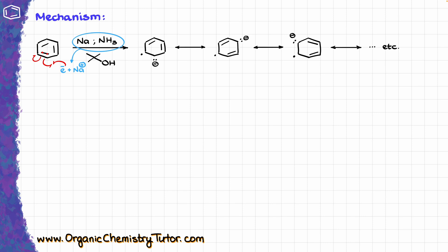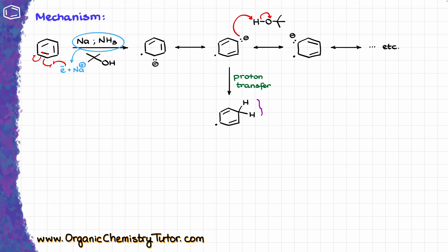Now that we have our anion radical, I'm going to bring in a source of protons — that's going to be my alcohol. Typically we use tert-butanol here, though you can also see versions with methanol, ethanol, regular butanol, and some others. The alcohol comes in and protonates the anionic part of the molecule. At this point I have an sp³ hybridized atom with two hydrogens on that carbon — one hydrogen was there from the beginning, and the other came from the tert-butanol.